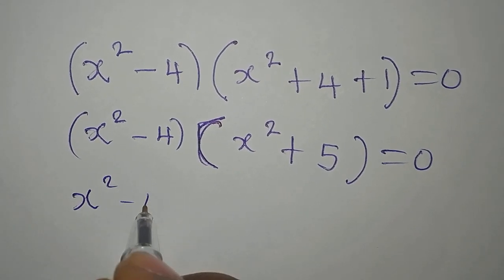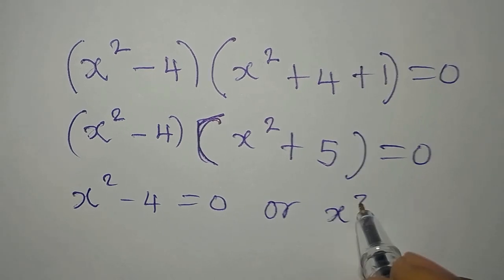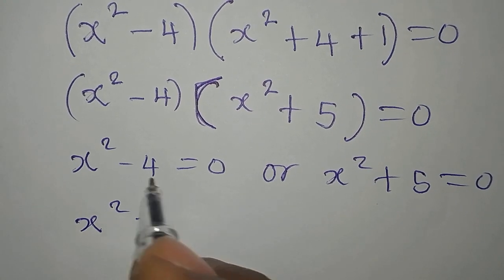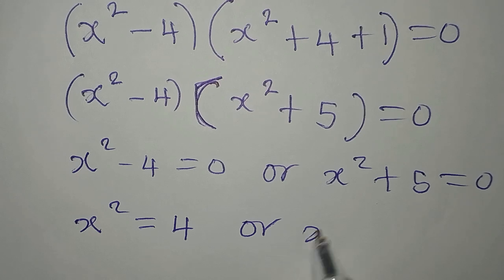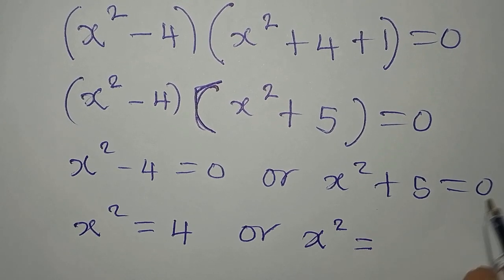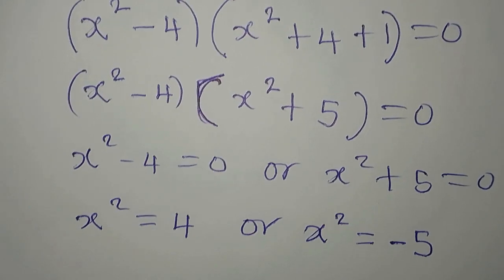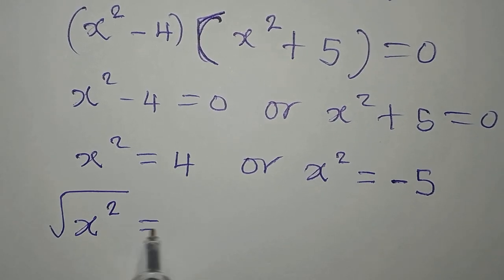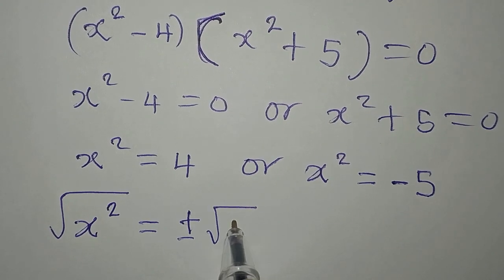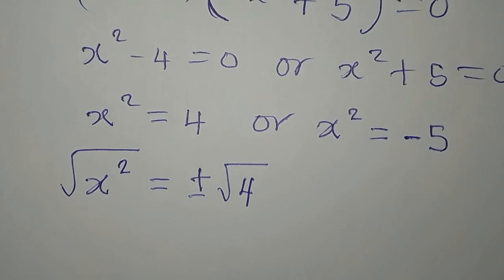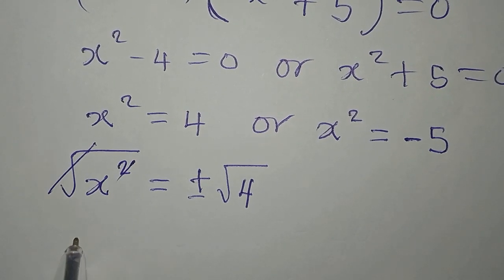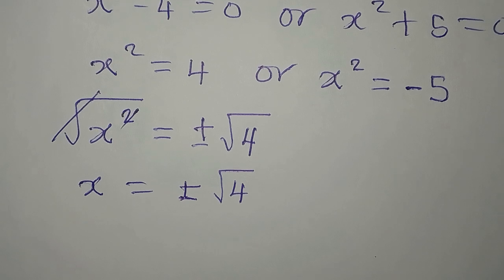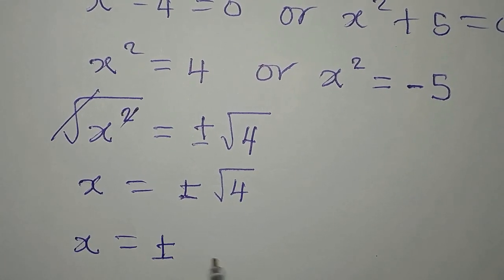From here, x squared minus 4 times x squared plus 5 equals 0. So we can say x squared minus 4 equals 0, or x squared plus 5 equals 0. From the first: x squared equals 4, so taking the square root of both sides, x equals plus or minus square root of 4, which is 2. So x equals 2 or x equals negative 2.